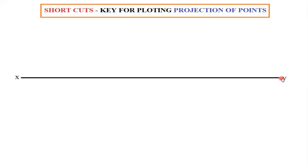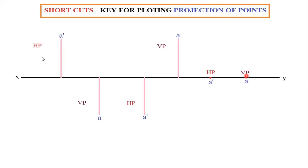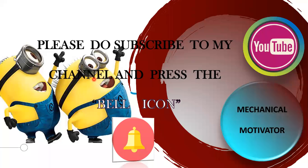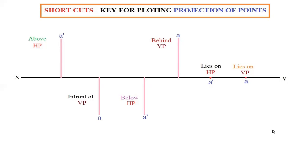Try to put a straight line and keep it as XY. Now try to put four lines like this — one, two, three, four. Then name them as A', A alternately. The next step is HPVP, HPVP, HPVP. Then write the positions: above, in front of; above, in front of; below, behind; lies on, lies on. Once you have this format it is very easy for you to solve the projection of points.